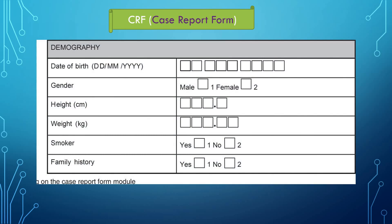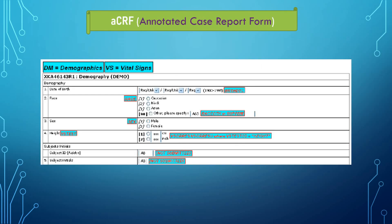Now let's look at a case report form. This is how a CRF looks — this is called a blank CRF, where it shows how the data should be collected at the sites. And this is called an annotated CRF or ACRF. Here you can see two domains mapped: demographic and vital signs. When mapping multiple domains in a single CRF, each domain should have a different color coding. You can see DM variables like race, sex, birth date, etc., and vital signs has the VS test captured here.